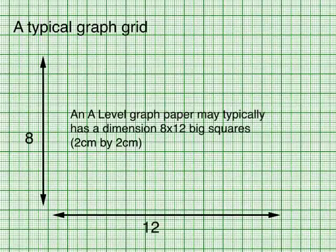To help yourself make a good decision in the scale, you got to know the kind of graph paper you are given in your examination. An A level graph paper typically has a dimension of 8 times 12 big squares. Each big square is 2cm by 2cm.